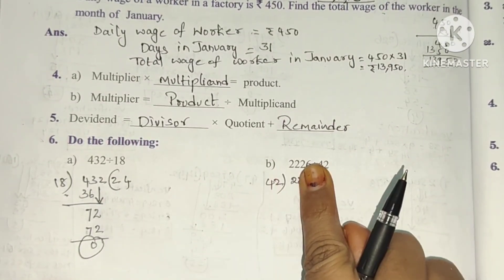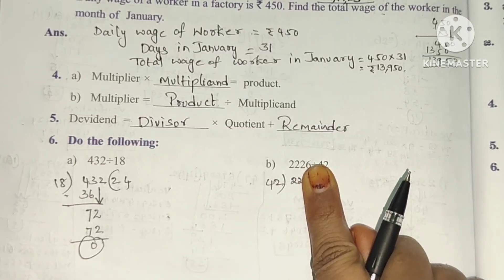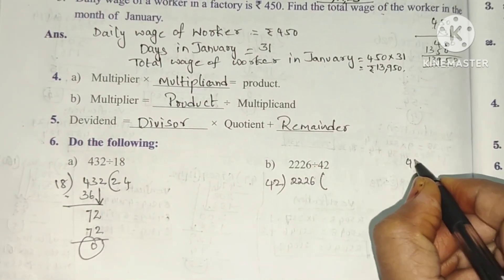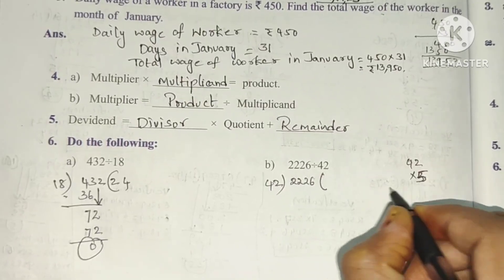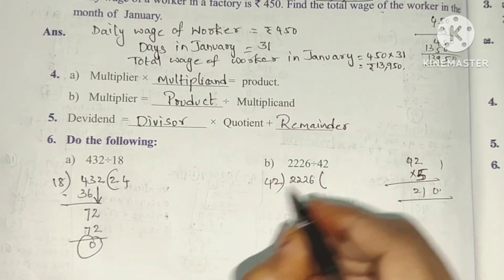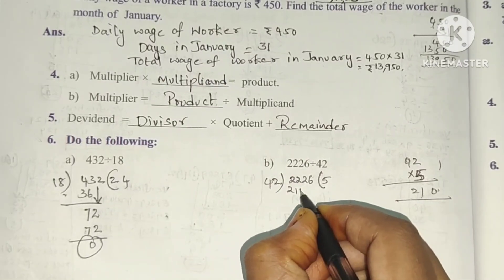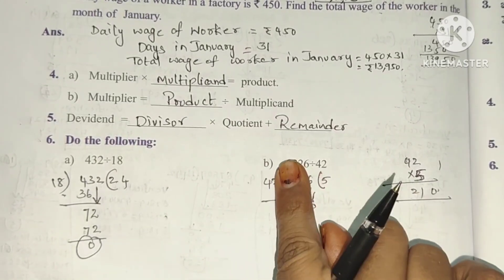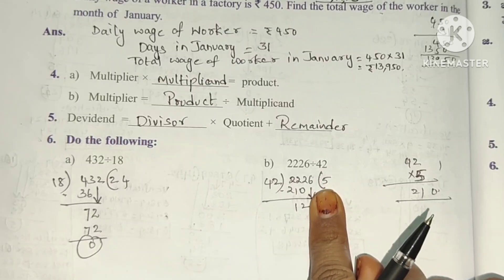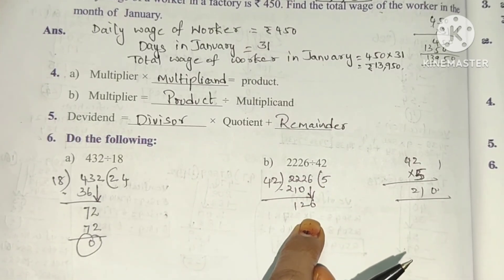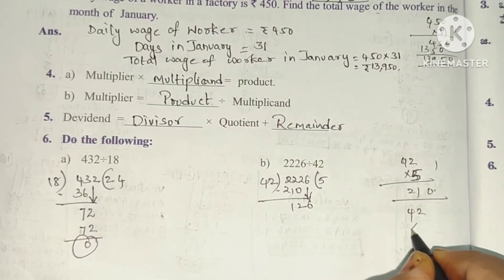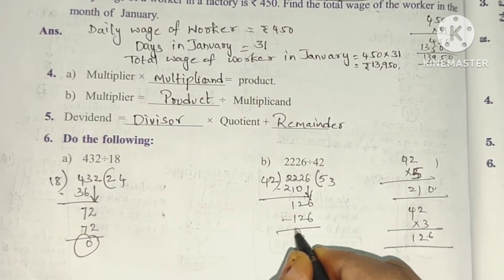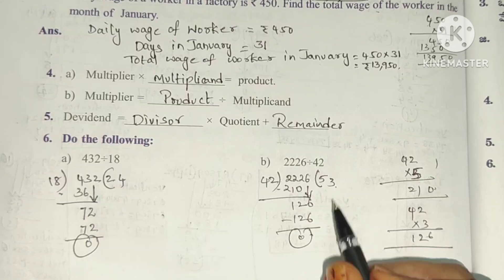Next, 2226 divided by 42. 42 times 5 is, 5 times 2 is 10. 5 times 4 is 20 plus 2 is 22. Subtraction gives 2 remainder 1. Next number down is 6. Again we have 4 here, 12. So 4, 3 times. 42 times 3, 3 times 2 is 6, 3 times 4 is 12. 126. So the quotient is 53, remainder is 0.